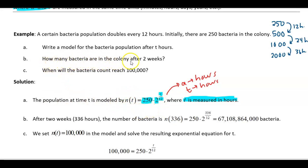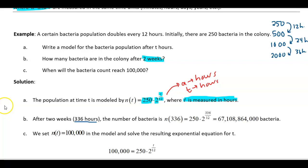Part B: how many bacteria are in the colony after two weeks? Two weeks is a different unit than hours, so you need to convert. There are 7 days in a week, so two weeks is 14 days. Multiply by 24 hours per day to get 336 hours. If your units are not the same, make sure you adjust accordingly — your 'a' and your 't' must use the same unit.